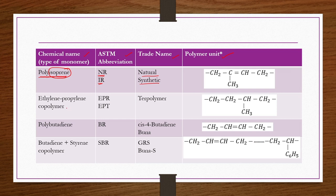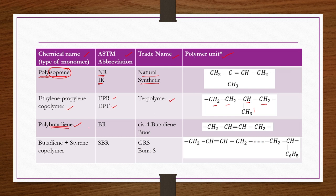Another entry is the ethylene propylene copolymer, with ASTM abbreviations EPR and EPT, trade name terpolymer, and repeating units CH2-CH2 and CH-CH3-CH2. Then there is polybutadiene, with ASTM abbreviation BR, trade names CIS-4 butadiene or BUNO, and repeating unit CH2-CH=CH-CH2. Butadiene production was also discussed in a previous chapter.